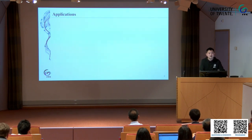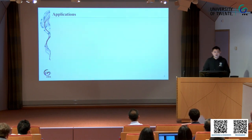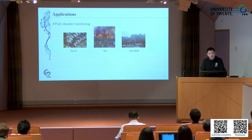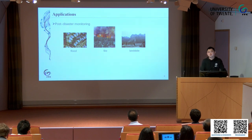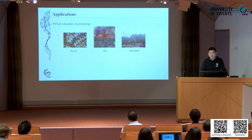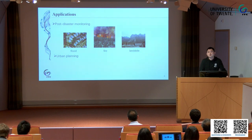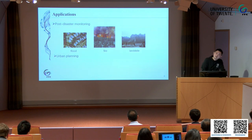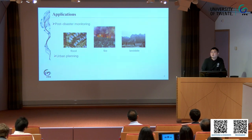So what can this dataset do for our community? With this dataset, we could perform very specific tasks like post-disaster monitoring. We can collect images taken after a disaster to make a quick response to events like flooding or fire. Also, you could use this dataset for urban planning — for example, if you want to place a basketball court or a park in the city, you can select appropriate locations for public facilities. This requires high-level reasoning over aerial images.